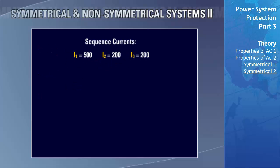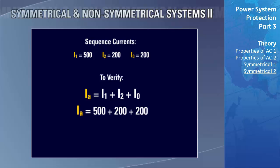To verify our calculations, we use the predetermined positive, negative, and zero sequence current values to recalculate the actual current on phase A at the time of the fault. Ia equals the positive sequence current plus the negative sequence current plus the zero sequence current: 500 + 200 + 200 = 900 amps — which matches the actual current measured on phase A by the GE Multilin SR-760. Modern microprocessor-based protective relays use symmetrical components to calculate positive, zero, and negative currents and voltages from CT and PT signals, and these quantities are then used by the protective elements within the relay.